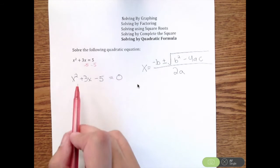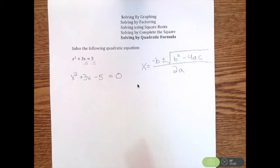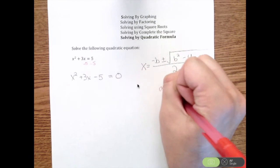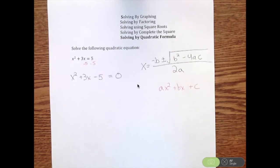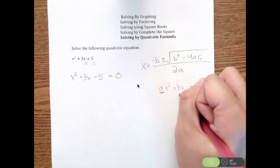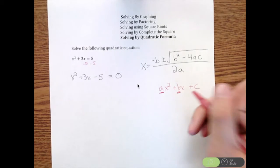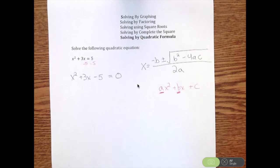Why this is important is this is now in standard form. So we need a, b, and c. If you recall the standard form of a quadratic, it's ax squared plus bx plus c. So a is always the coefficient in front of x squared, b is the coefficient in front of x, and c is our constant.